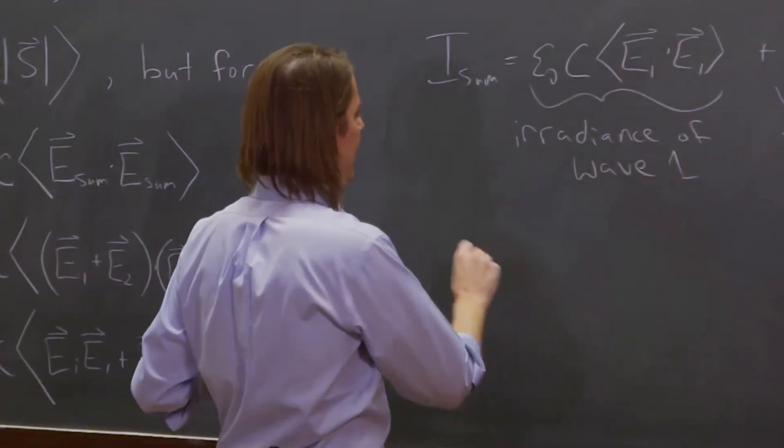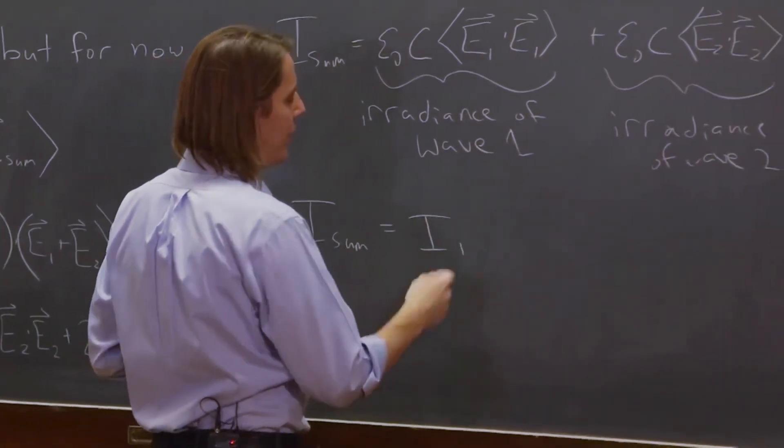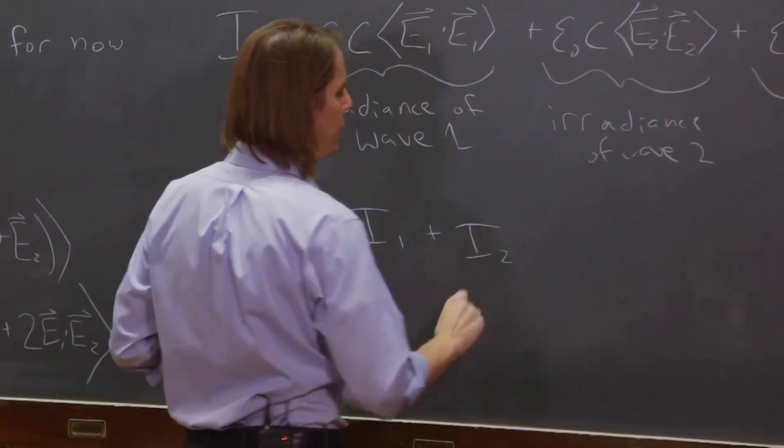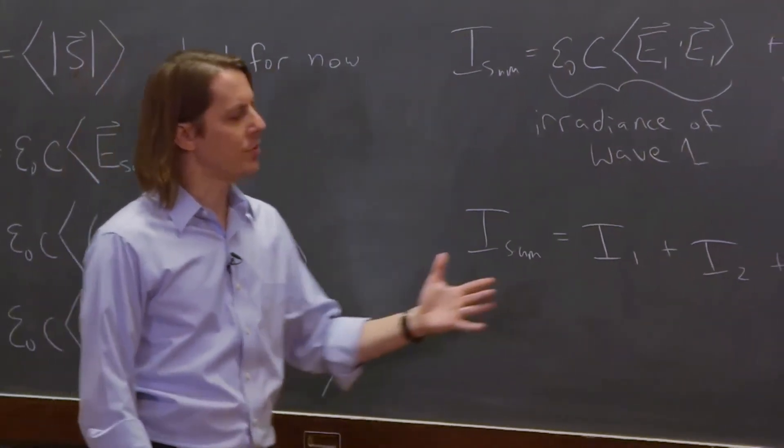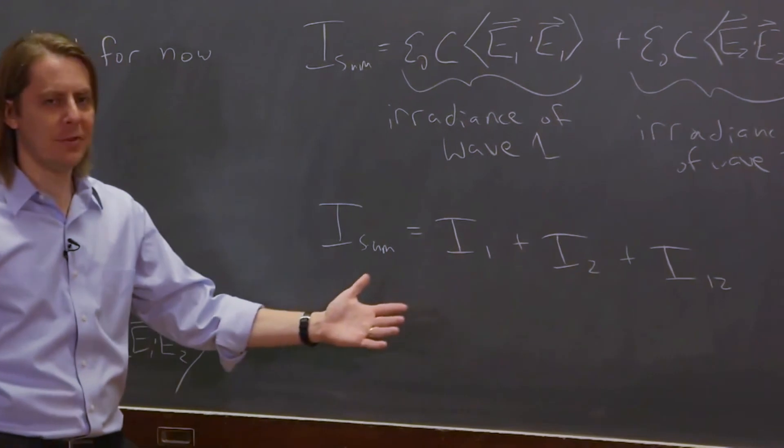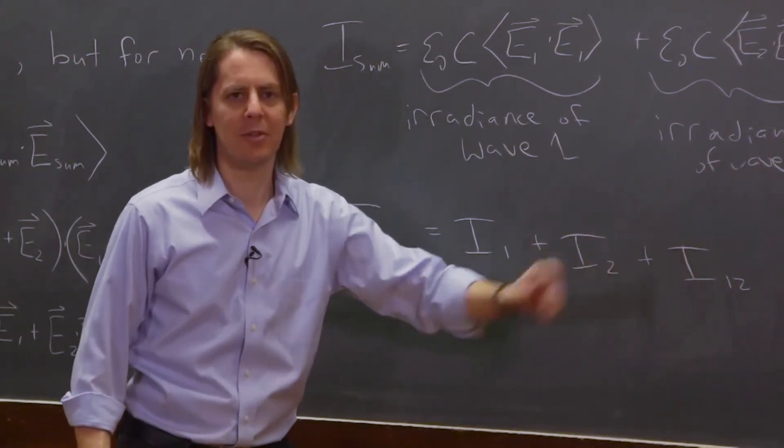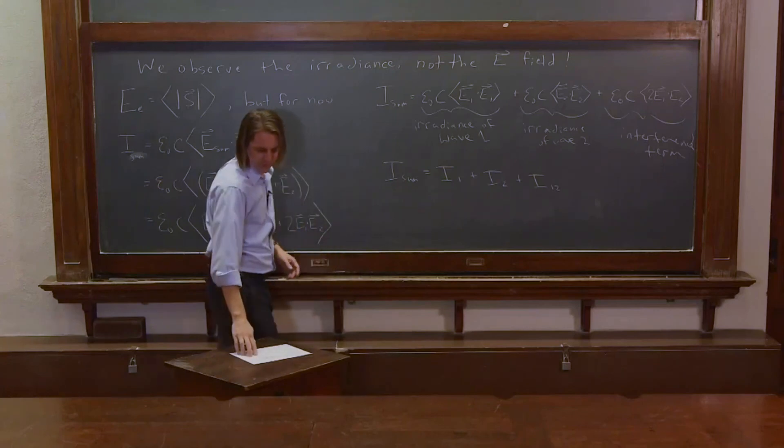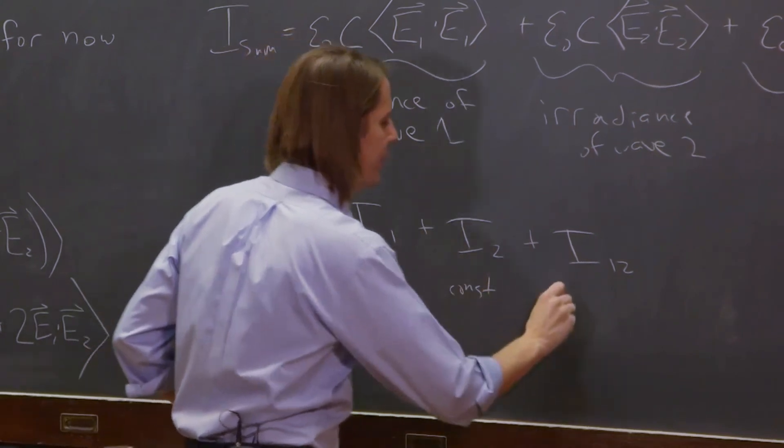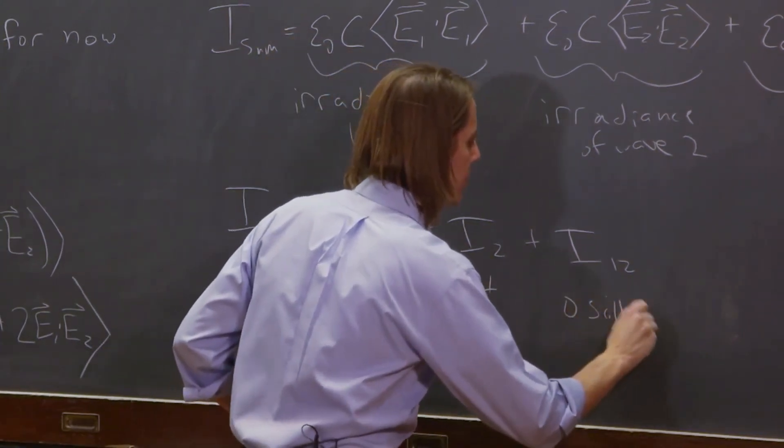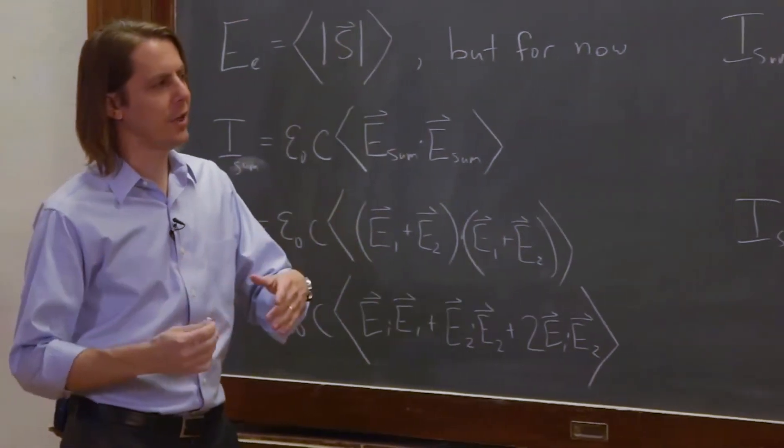So this is usually written in shorthand as I_sum is I1, the irradiance of one, plus I2, the irradiance of two, plus the interference term I12. So it looks like simple little numbers. But in physics, we know this is a constant, this is a constant. This thing is going to vary and mess everything up. This is typically constant, constant. And this is the one that's going to oscillate and give you your constructive interference and your destructive interference.